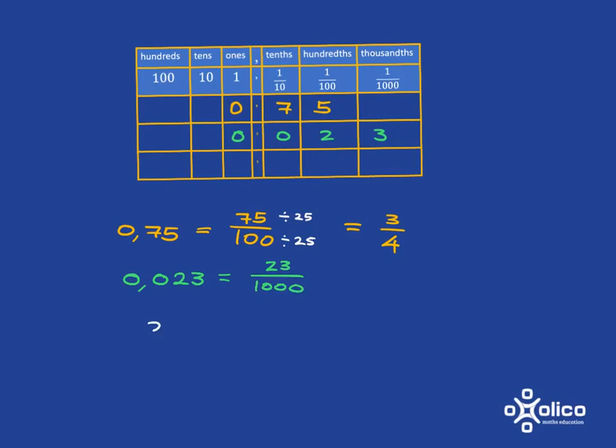Last quick example. If I look at 2.6, that 2 is in the ones. And then I've got 6 tenths. So it's 2 and 6 tenths. And if I simplify 6 tenths, divide top and bottom by 2, I get 2 and 3 fifths.